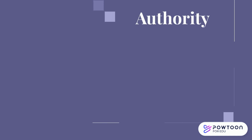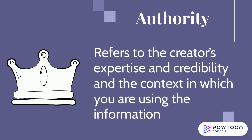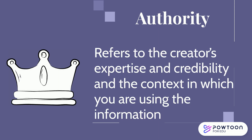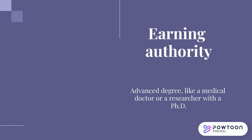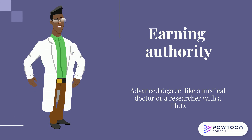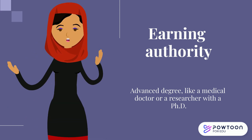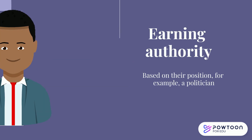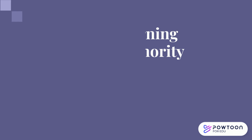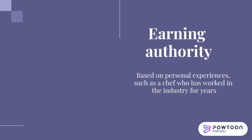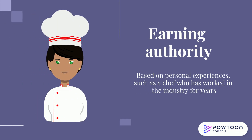The next step in evaluation is the idea of authority. Information sources reflect their creator's expertise and credibility and are evaluated based on the information needs and the context in which you are using the information. There are several different ways someone can earn authority. For example, they could have an advanced degree, like a medical doctor or a researcher with a PhD, or authority based on their position, such as a politician. Authority could also be earned based on personal experiences, such as a chef who has worked in the industry for many years.